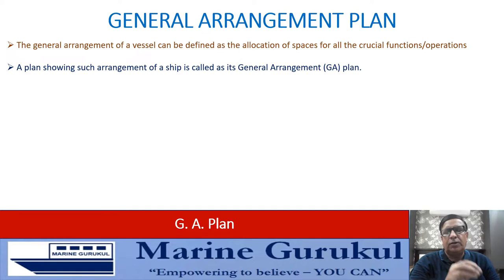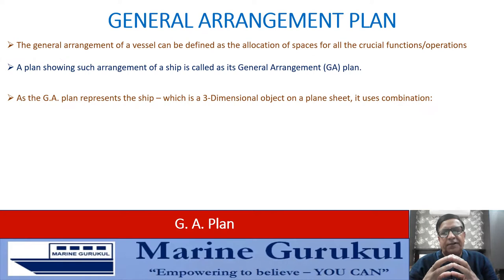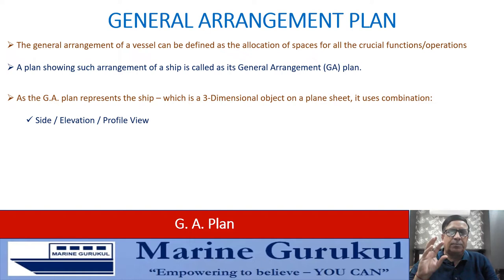The size of accommodation and efficient operation of a ship depends on proper arrangement of each individual space and efficient interrelationship amongst different spaces. The general arrangement of a vessel can be defined as the allocation of different spaces for different functions — the crucial functions for the operation of the vessel. A plan showing such allocation of spaces for different functions is what is called the general arrangement, or the GA plan.